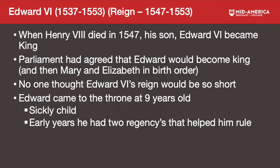Parliament had agreed that Edward would become king, then Mary would become queen, and Elizabeth would then become queen — in birth order. No one thought Edward the Sixth's reign would be so short. He came to the throne at nine years old, was a very sickly child, and died young. His early years included two regencies that helped him rule.